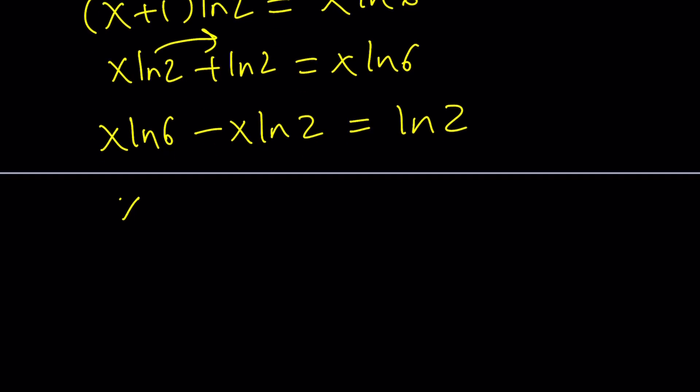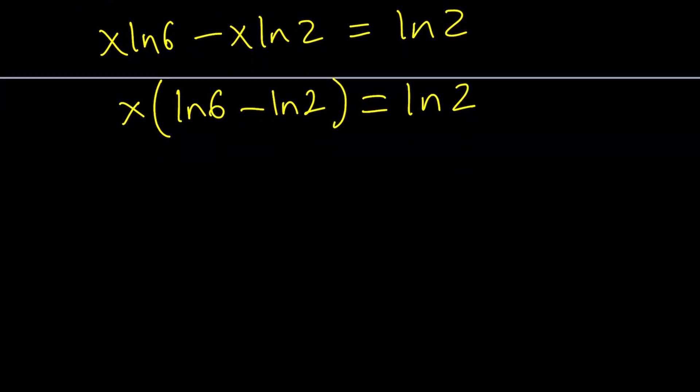X ln 6 minus X ln 2 equals ln 2. Now since we have an X as a common factor, we can go ahead and factor it out and write this as X times the quantity ln 6 minus ln 2 equals ln 2. And then we can go ahead and divide both sides by ln 6 minus ln 2.